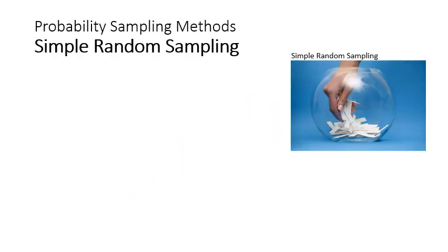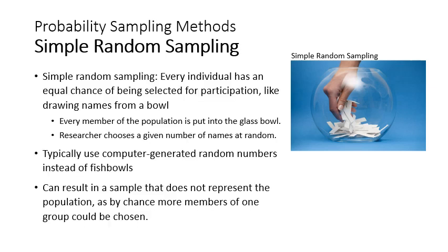What is considered research? Probability sampling methods, meaning each individual has an equal chance of being chosen. Simple random sampling is one of the most common ways — it's basically putting every name in a hat and drawing out the number of names you're interested in. You need a list of each member of the population, then choose a certain number at random. We now use randomly generated numbers rather than fish bowls, and there are many online tools for doing this.